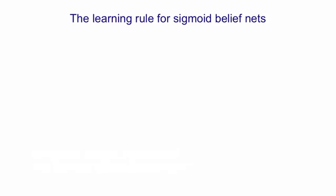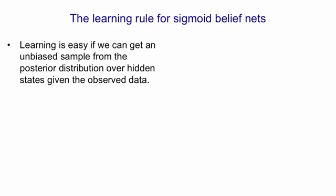Now, before I go into ways in which we can try and get samples from the posterior distribution, I just want to tell you what the learning rule is if we could get those samples. So if we can get an unbiased sample from the posterior distribution over hidden states, given the observed data, then learning is easy.